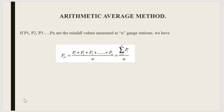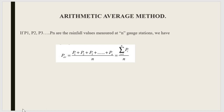The first method is the arithmetic average method. This is one of the simplest methods of estimating average rainfall. The average rainfall is calculated by taking the arithmetic average of recorded rainfall at the various stations. Suppose you have stations from 1 to n, and the rainfalls P1, P2, P3 till Pn are received from these stations. Then the average rainfall can be calculated using this formula.